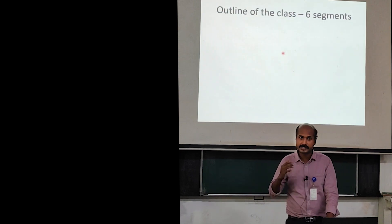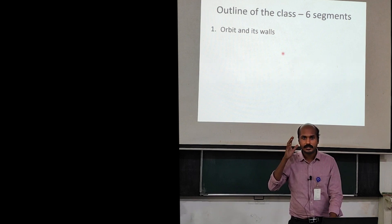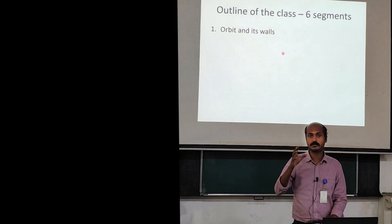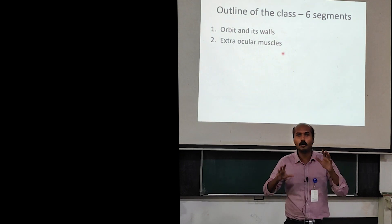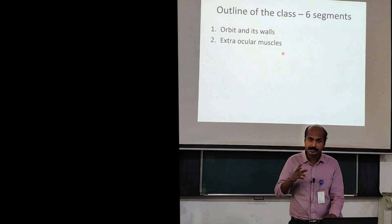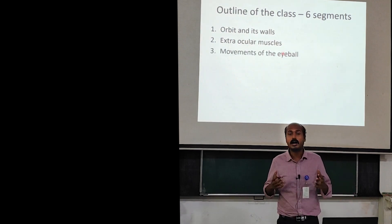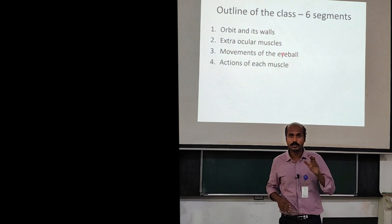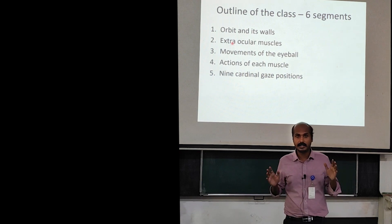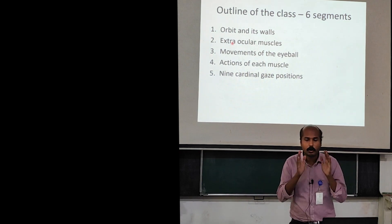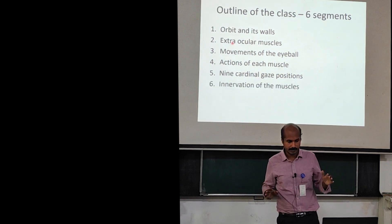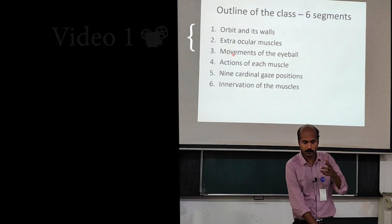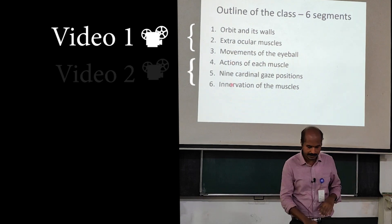The outline of this class is divided into six segments. First, I will show the geometry of the orbit and its walls. Second, I will detail the names of the extraocular muscles, why they are named so, and the orientation of each muscle. Third, I will define the movements of the eyeball. Next, the actions of each muscle, then the nine cardinal gaze positions — very important clinically — and finally the innervations of the muscles. The first three will be covered in the first video and the next four in the second video.